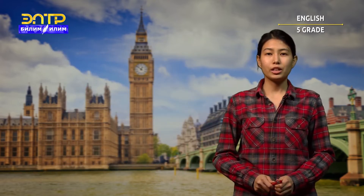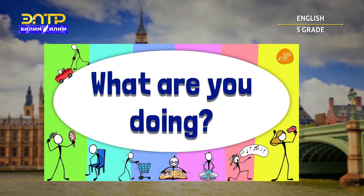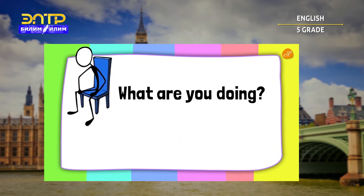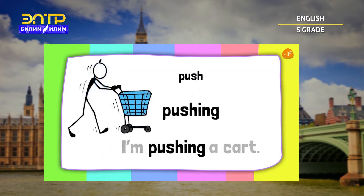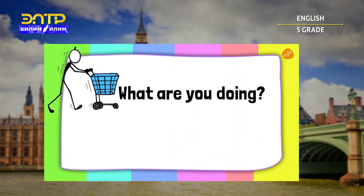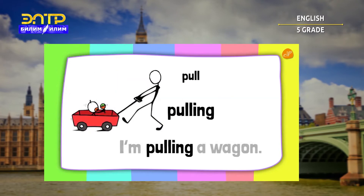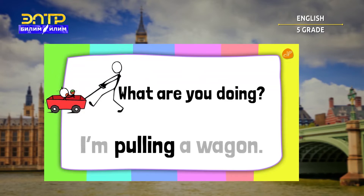Now friends, we are going to watch a video to review the topic and some examples of using the present continuous tense. What are you doing? Sit — sitting — I'm sitting in a chair. What are you doing? I'm sitting in a chair. Push — pushing — I'm pushing a cart. Pull — I'm pulling a wagon. What are you doing? I'm pulling a wagon.